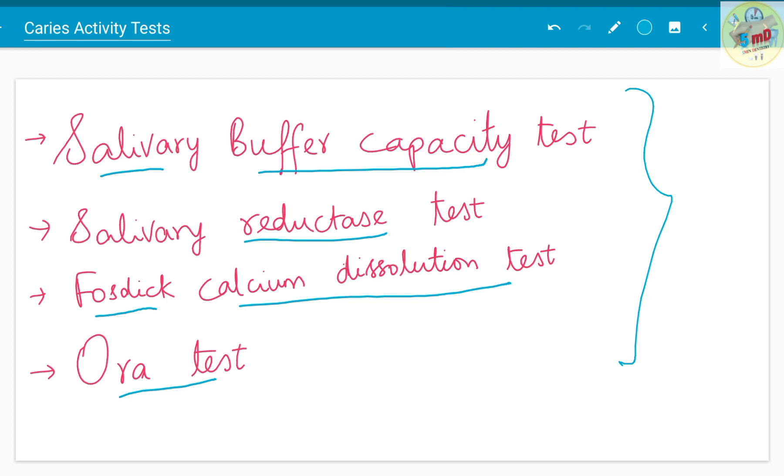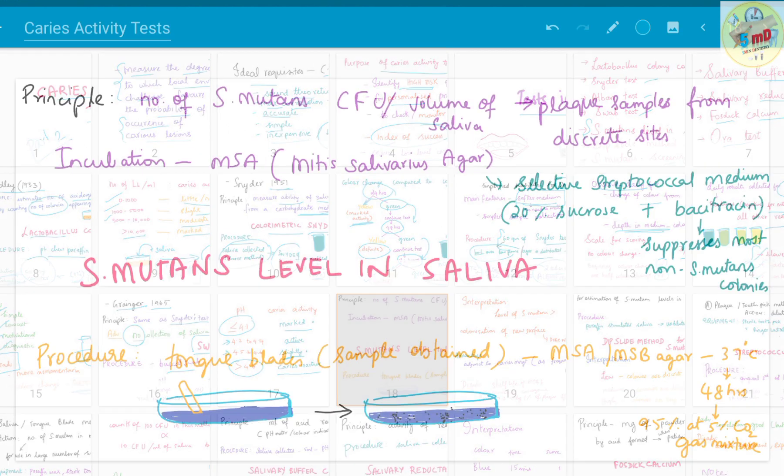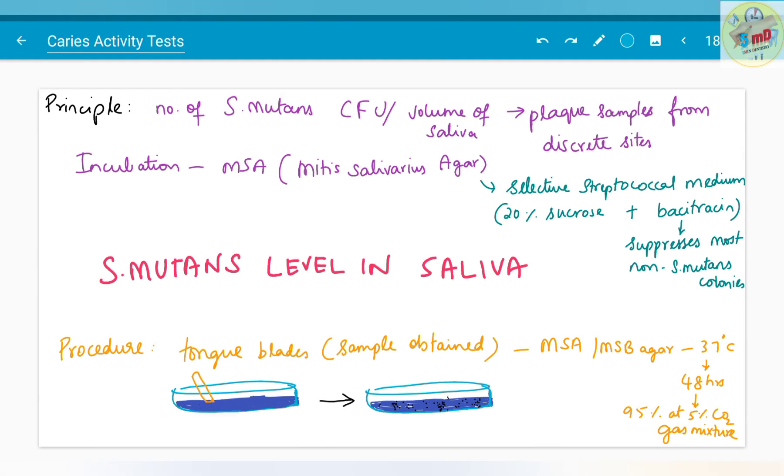Let us start with streptococcus mutans level in saliva. The principle of this test is based on plaque samples collected from discrete sites. In those plaque samples, the number of streptococcus mutans colony forming units present per volume of saliva is calculated. The incubation is done in MSA agar, that is mitis salivaris agar. It is a selective streptococcal medium as it suppresses mostly all the non-streptococcus mutans colonies.